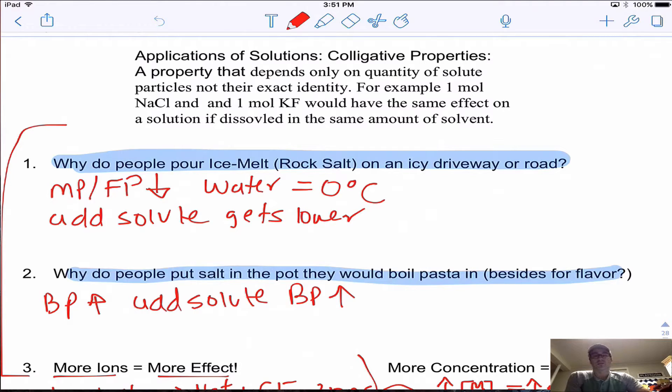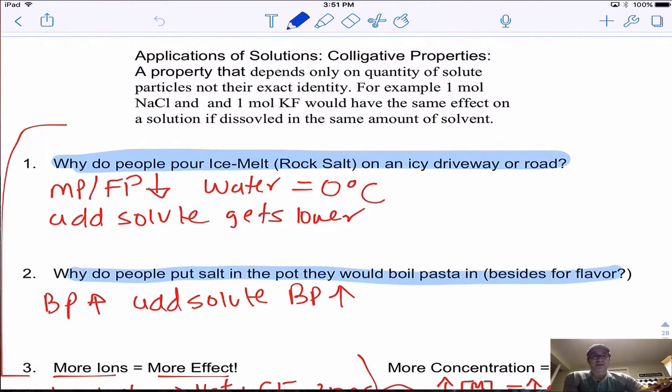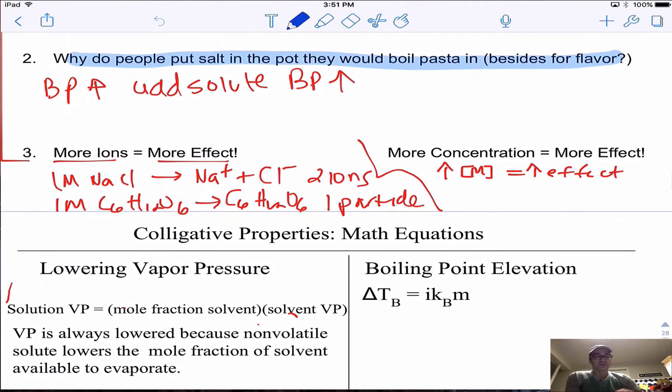This property is based only on the amount of solute that's added. The more solute I add, the more likely I am to have a change, and that change will get greater as I add more solute. If I have a salt compared to a covalent compound, the salt will form more ions and those ions will have more effect.